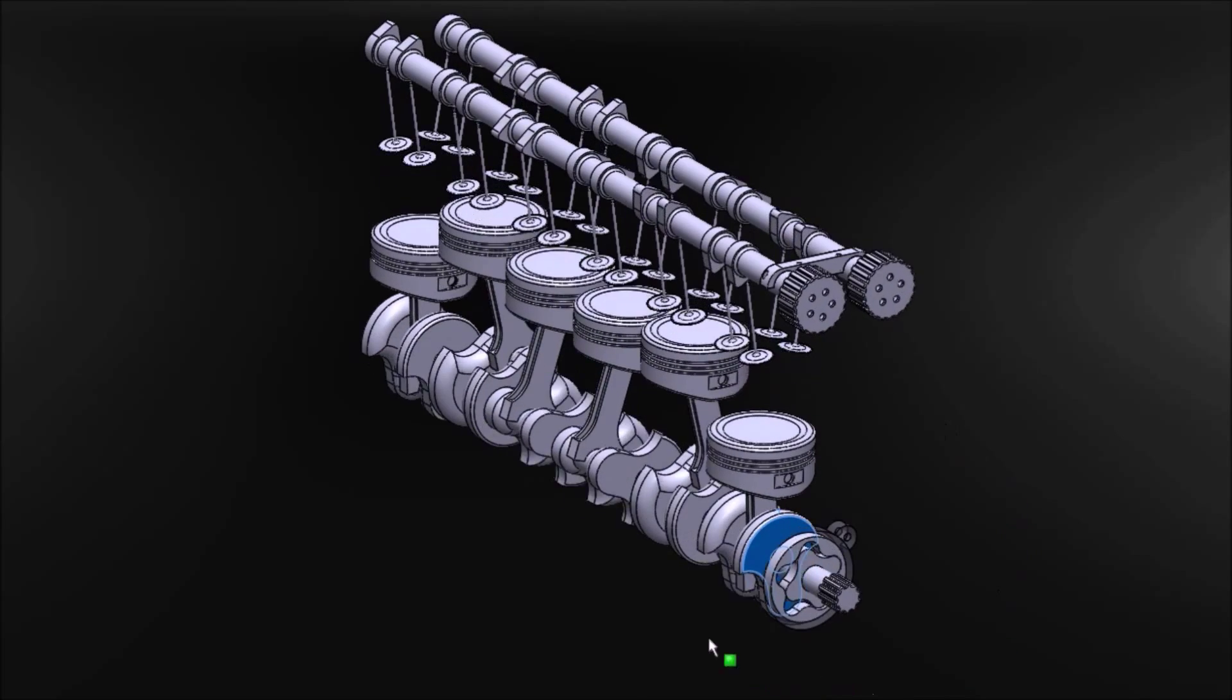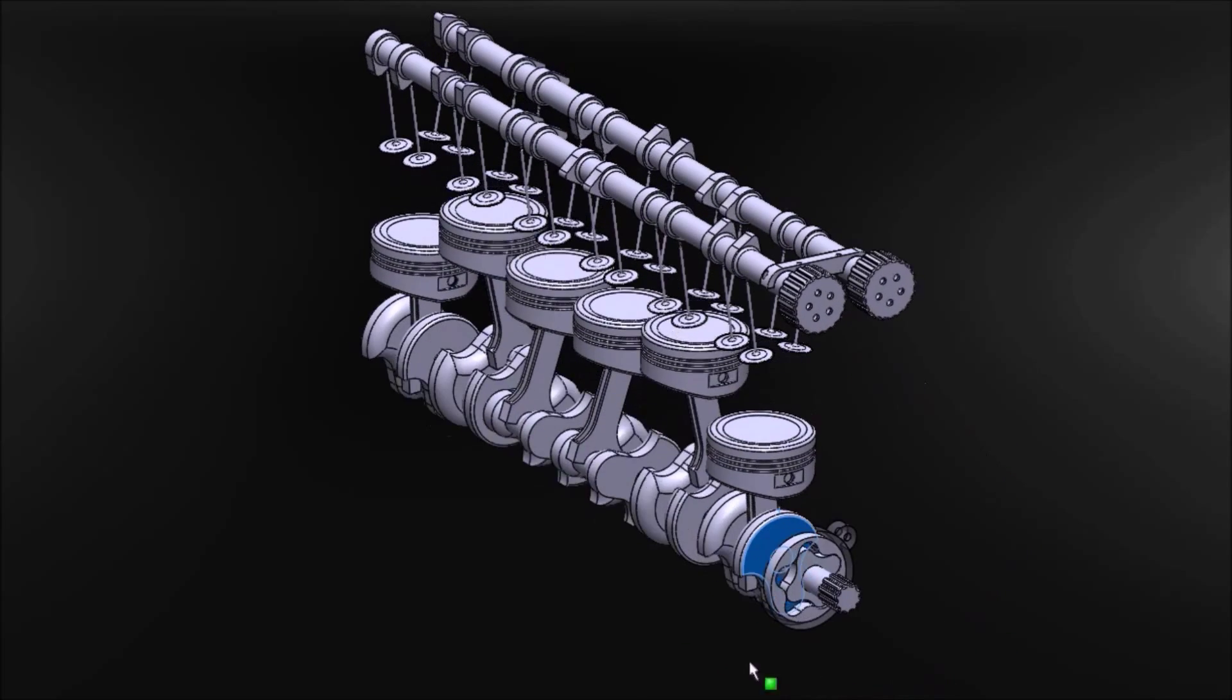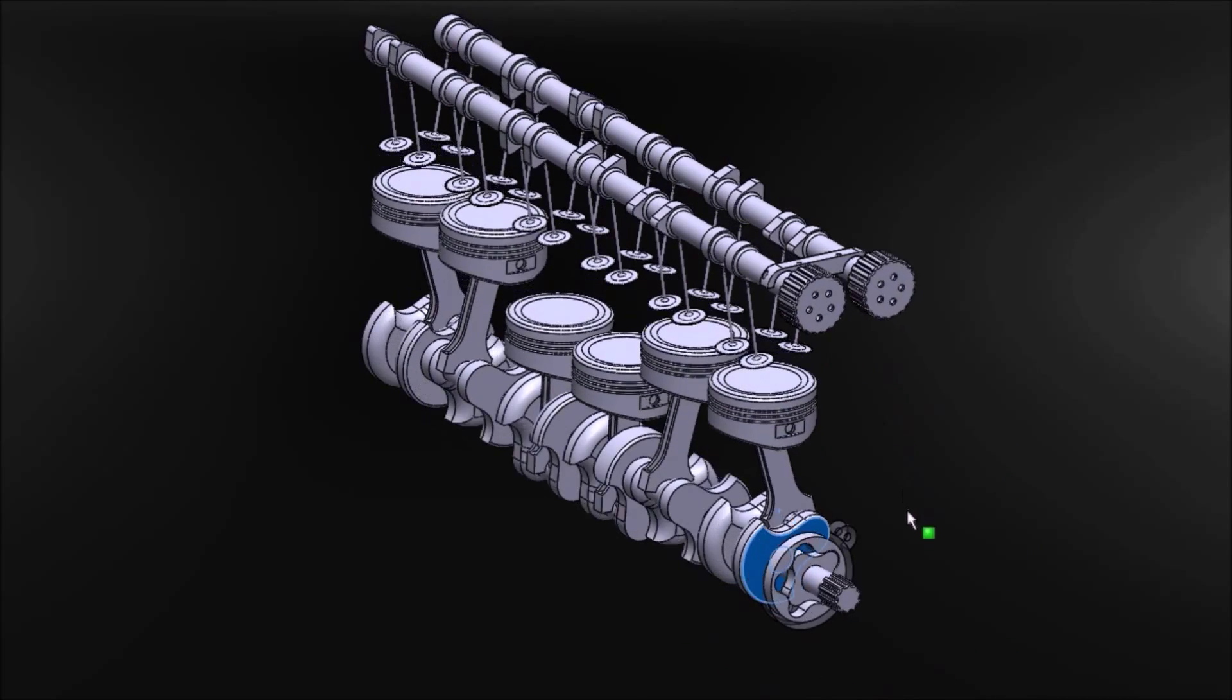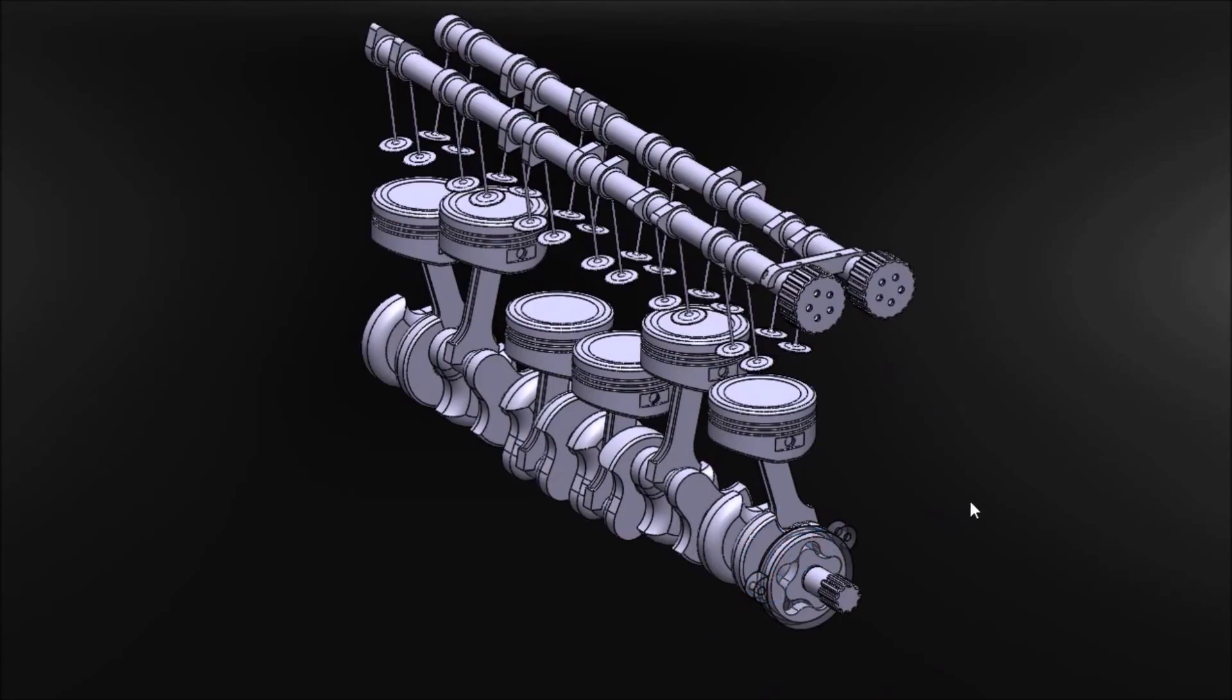This engine is known as a straight six as it has six pistons all in one row. A straight four, which is in a lot of production cars, simply has four pistons in one row. Now you've probably heard of a V engine before, especially the popular V8. I'll open up an example of that.